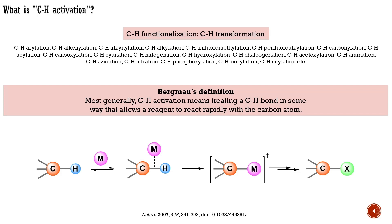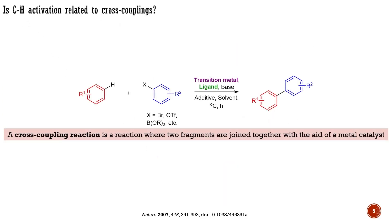This activation can be achieved by most transition metals, which can serve as catalysts. As you may recall from the preceding module on cross-couplings, in organic chemistry, a cross-coupling reaction is a reaction where two fragments are joined together with the aid of a metal catalyst.